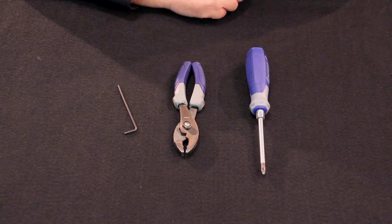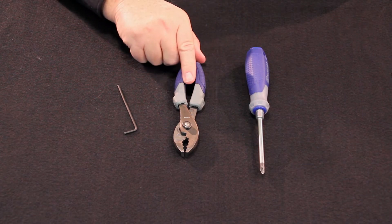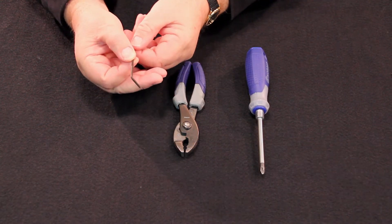To reinstall the flow adjust knob, you'll need a number two Phillips head screwdriver, a pair of pliers, and a 3/32 inch hex key.